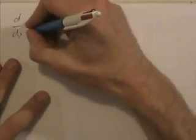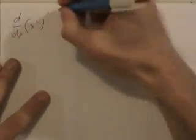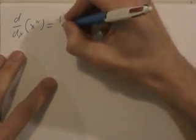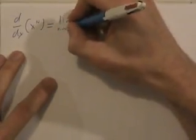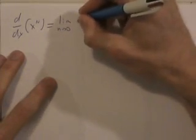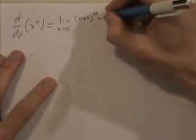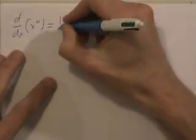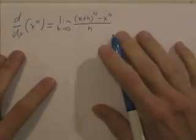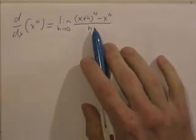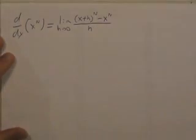To do the actual rule, the derivative with respect to x of x to the n, that means take the limit as h approaches zero of x plus h to the n minus x to the n over h. If we use the h definition, this is how it works out. Now, if we can evaluate this limit, that's going to give us the result of the power rule.